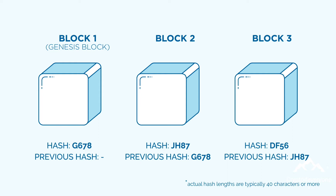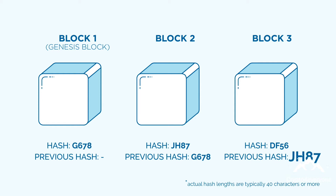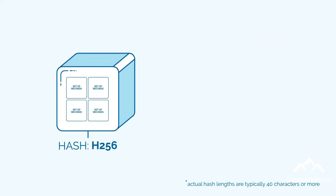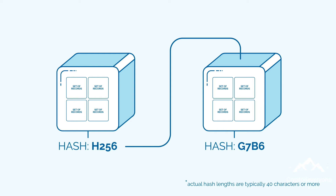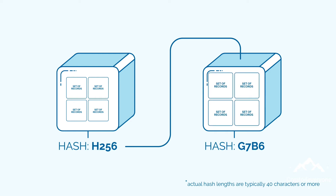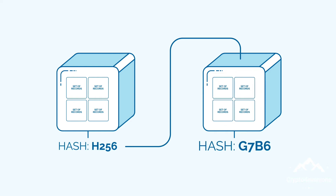Looking at our diagram, we can see that block number 2 contains a hash of block number 1, while block number 3 contains a hash of block number 2. By adding the hash of the previous block to the data, or records, of its subsequent block, the hash of the subsequent block is now partially based on the hash of its preceding block.